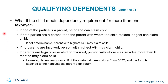What if the child meets dependency requirements for more than one taxpayer? If one of the parties is a parent, he or she can claim the child. If both parties are parents, the parent with whom the child resides the longest can claim the child. If that's not determinable, the parent with the highest AGI may claim the child. If no parents are involved, the person with the highest AGI may claim the child. If parents are legally separated or divorced, the parent with whom the child resides more than six months may claim the child. However, dependency can shift if the custodial parent signs Form 8332 and it is attached to the non-custodial parent's tax return.